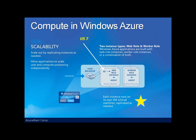With regard to computation, you'll create applications that consist of web and worker roles. For scalability, you will dictate to the Azure cloud environment how many copies or instances of each role you want to exist. Each instance runs on its own virtual machine within the Fabric. For those roles that are exposed to outside traffic — web roles, for example — Azure also provides a load balancer to help spread the traffic amongst the instances that are running.